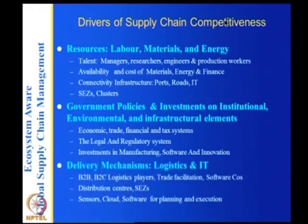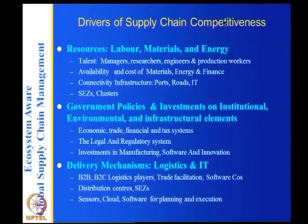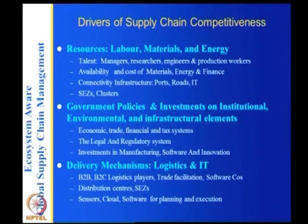The economic, trade, financial, and tax systems; the legal and regulatory framework; investments in manufacturing, software, and innovation — these cover the government side. Delivery mechanisms include logistics and IT, B2B logistics players, trade facilitation software, distribution centers, special economic zones, sensors, and cloud software for planning and execution. These are the drivers of supply chain competitiveness, also called the investment climate.